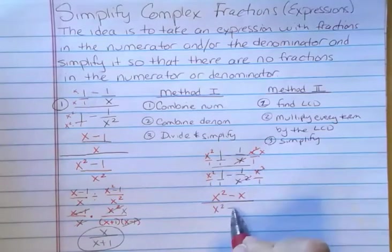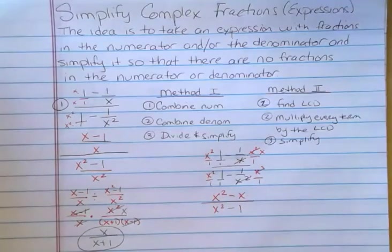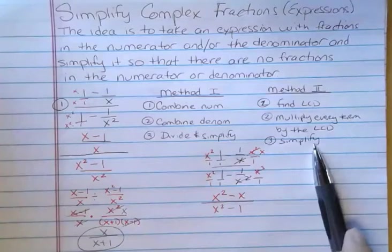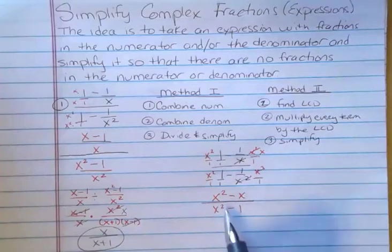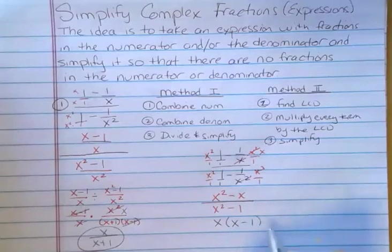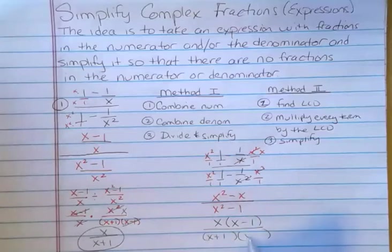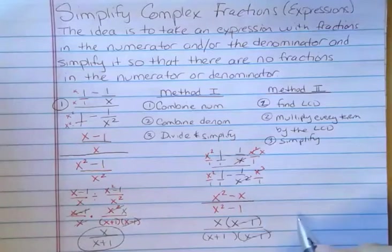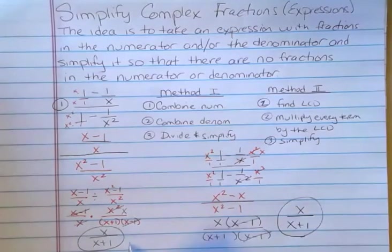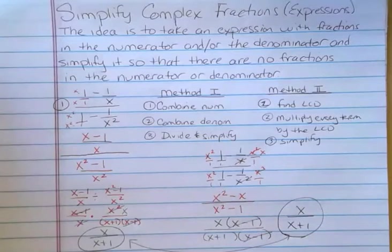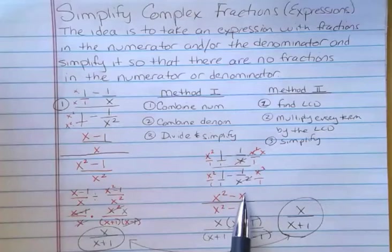I have multiplied everything by the LCD, but the simplifying is the big part in this problem. I'm going to factor out a common factor of x at the top to get x times x minus 1. And I'm going to factor the difference of squares down here, like I did in the other method: x plus 1 times x minus 1. Now I can see that the x minus 1 cancels, leaving the same answer I got before. Different method, completely different method, but it gives you the same answer. I typically like the second method better when things aren't too complicated, like this one.